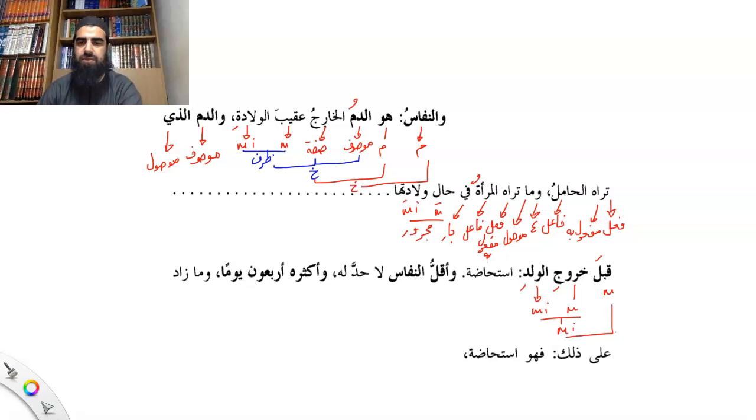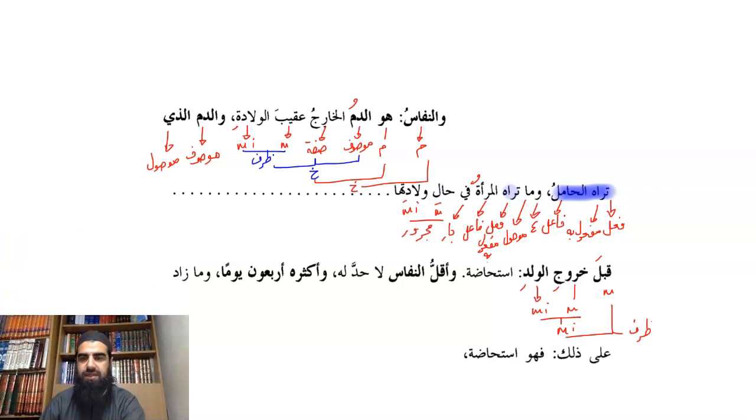Qabla is the mudaf and khuruj al-walad mudaf, mudaf ilayhi, and all that becomes dharf. So then all of this now becomes the ma'tuf, and then all that becomes ma'tuf. And plus the ma'tuf alayhi is all the silah of alladhi.